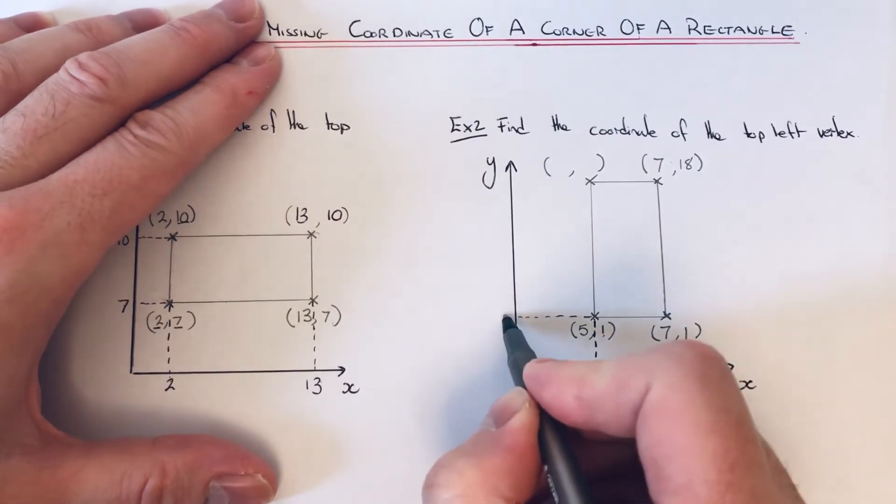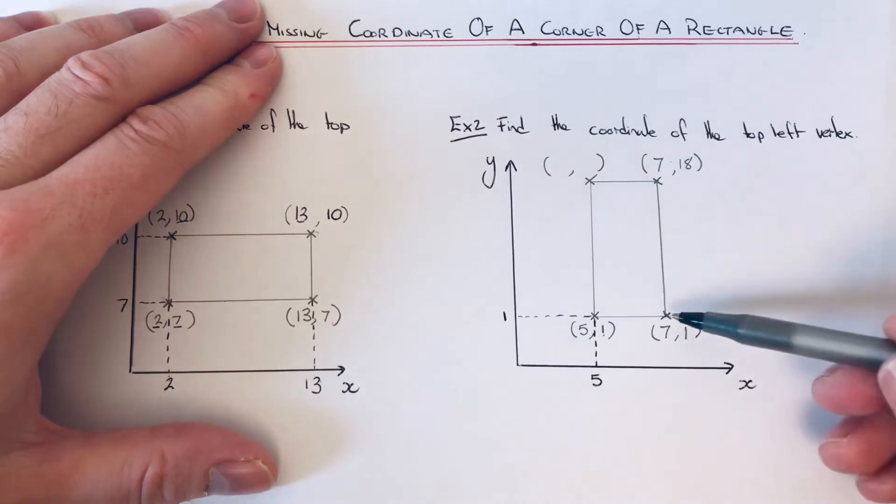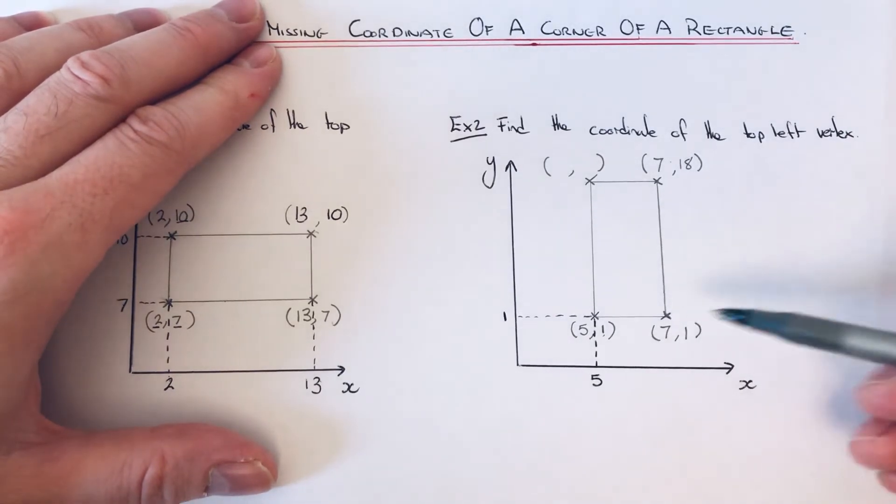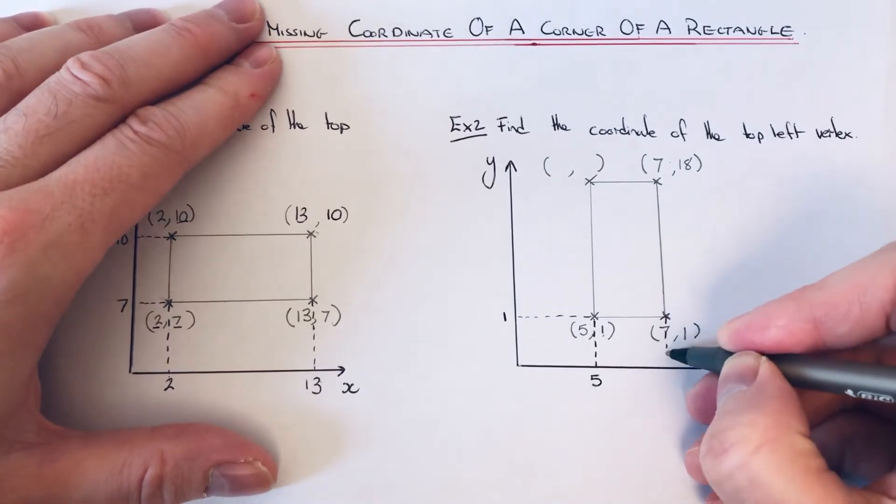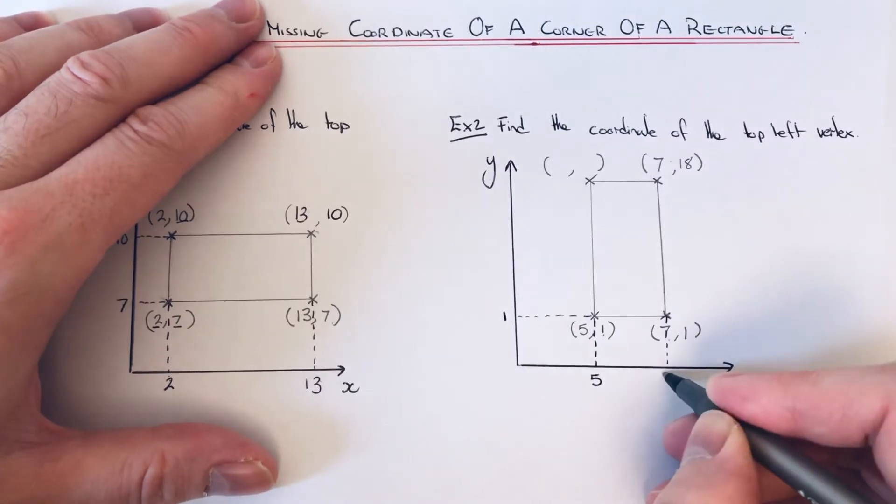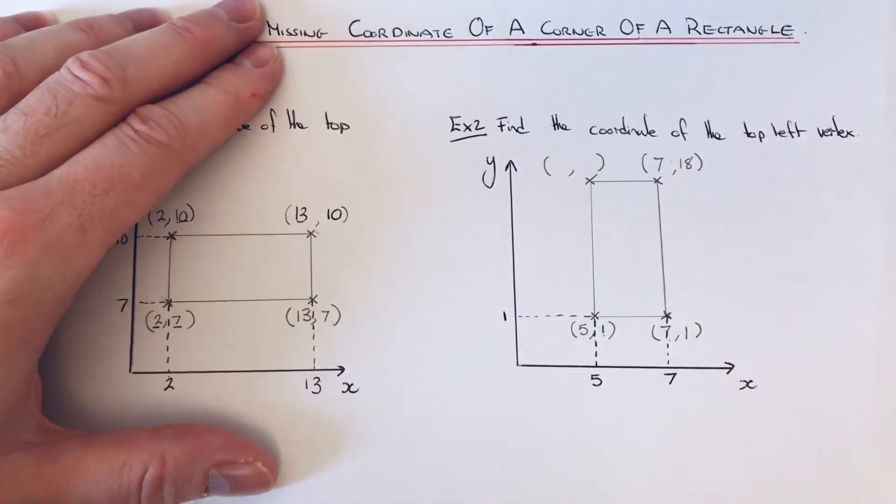Let's do this corner next - this one's seven comma one. If we do a line going down, that number here will be seven. We've got the y-coordinate there already, which is one.